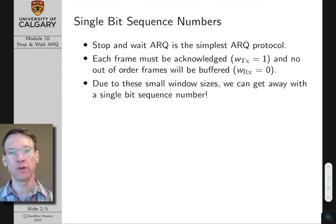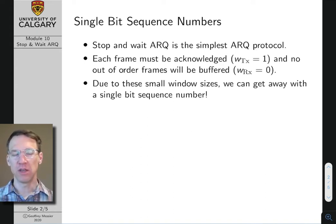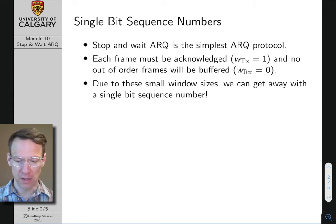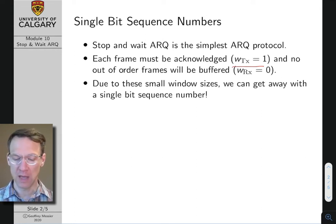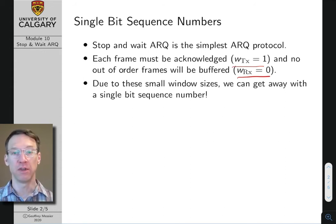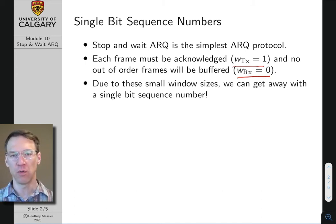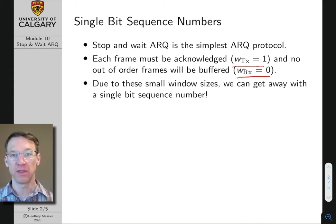If you've just finished watching module 9 where we talked about the sliding window protocol, stop-and-wait ARQ is really a simpler special case of the sliding window protocol where we have a transmit window of one — so only one frame can be outstanding at one time — and a receive window of zero, so the receiver doesn't buffer any out-of-order frames. The effect is a very simple protocol where the transmitter sends one frame and waits for an acknowledgement; if it doesn't get the ACK, it just keeps resending that frame until the ACK arrives, then moves on to the next frame.